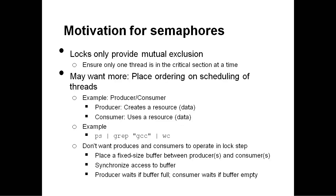Let's first look at the motivation for semaphores. Why do we need semaphores if we have locks that seem to work so well? The problem is that locks only provide one kind of operation, which is mutual exclusion. They make sure that only one thread executes holding the lock at a time, for example, a lock protecting a critical section.